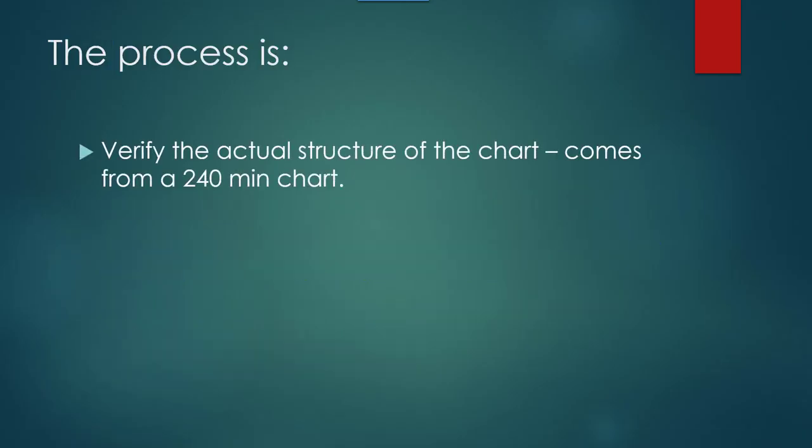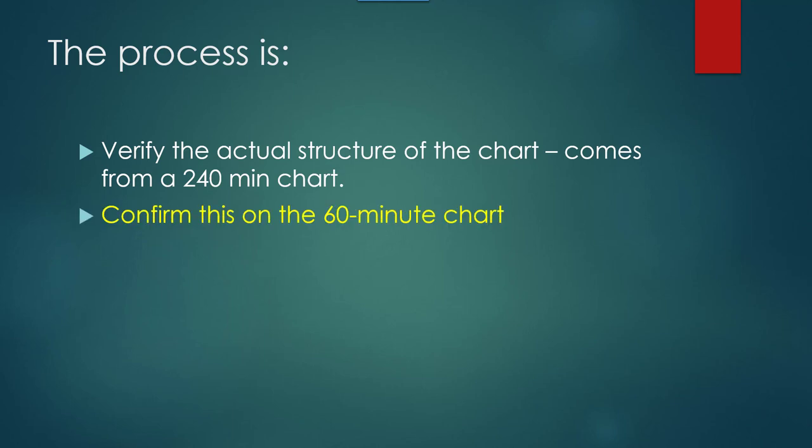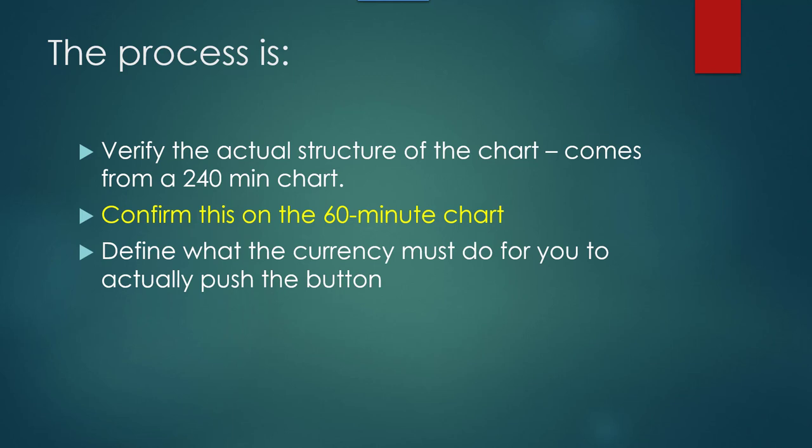So the process is very simple. You verify the actual structure on the chart — that comes from a 240 minute chart. Then you confirm that on a 60 minute chart. You could have a 240 minute chart that says you had a trend going down, but when you get on the 60 minute chart, you realize you're in a correction going up. So it's important to identify what the structure actually is for the day.